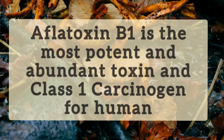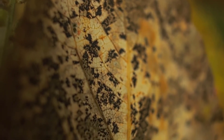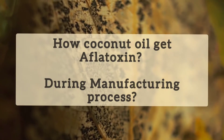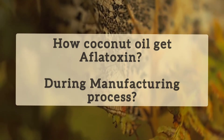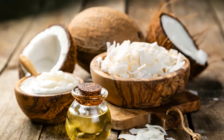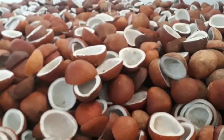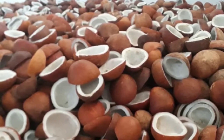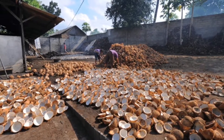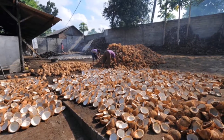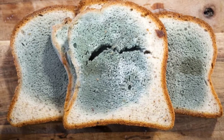In the process of manufacturing coconut oil, the fresh coconut kernel, which contains a high percentage of water and oil, is sun-dried and then subject to hot air drying to produce copra with a moisture content of less than 6 percent. During the drying process to get copra and in storage, due to less hygienic practices, Aspergillus fungi can grow and produce aflatoxin.